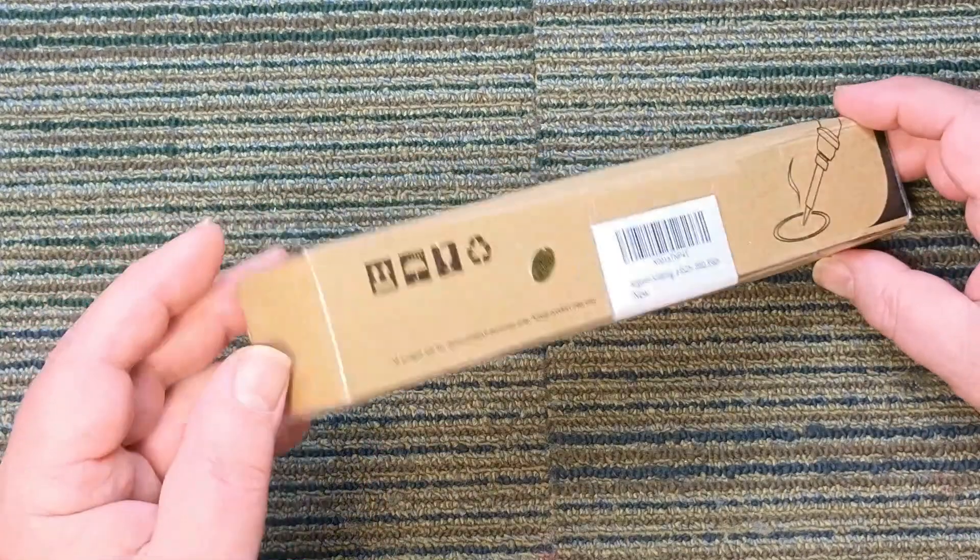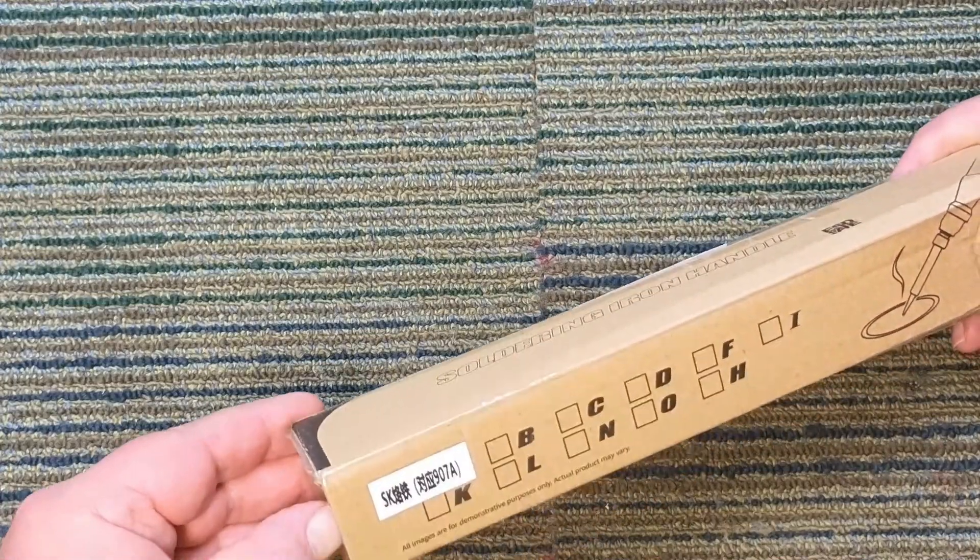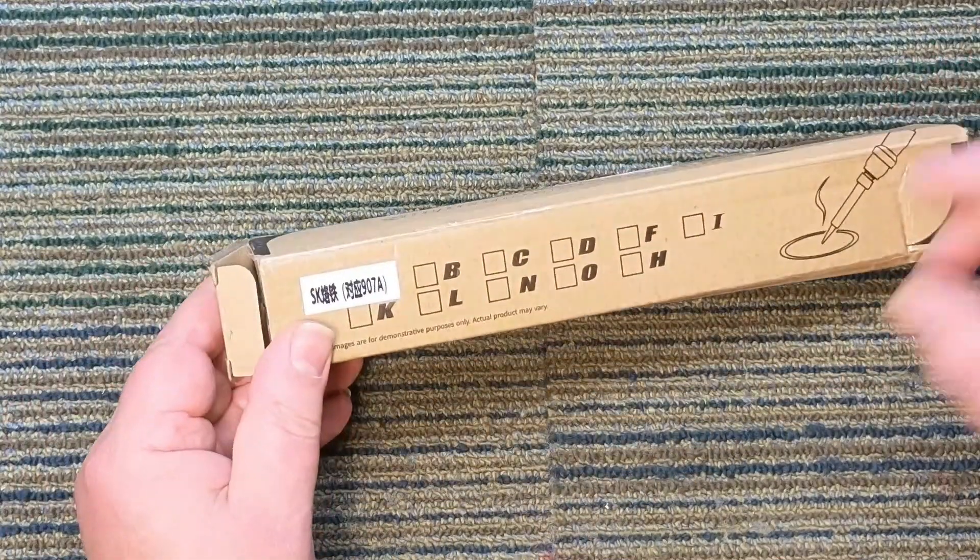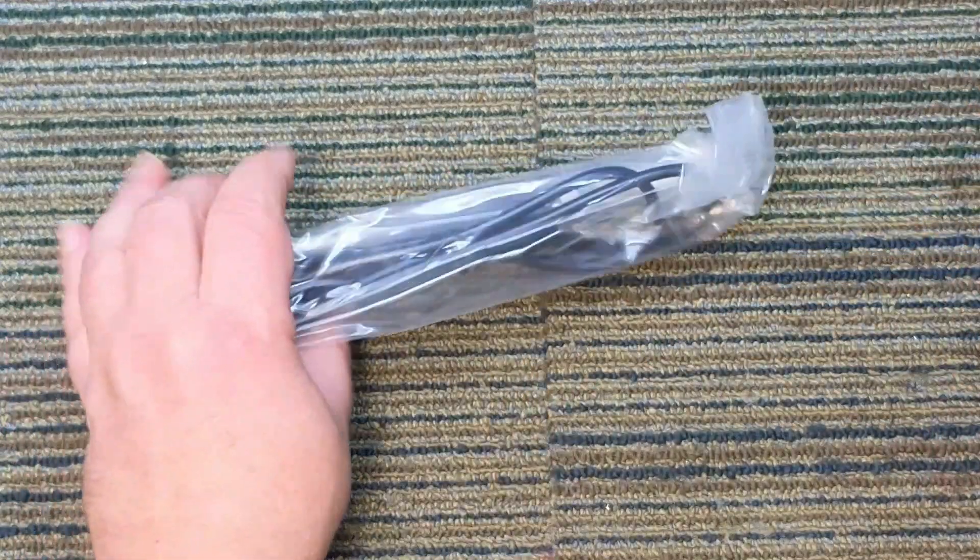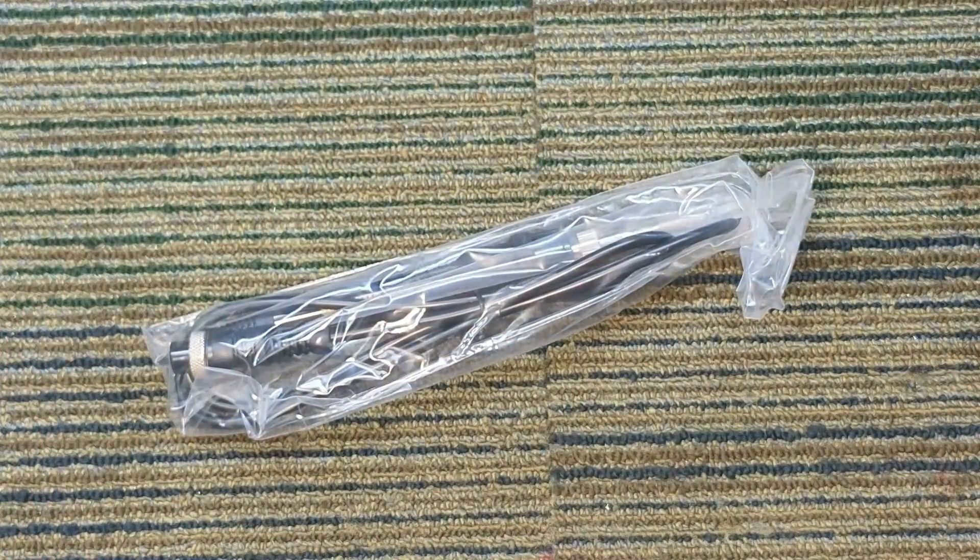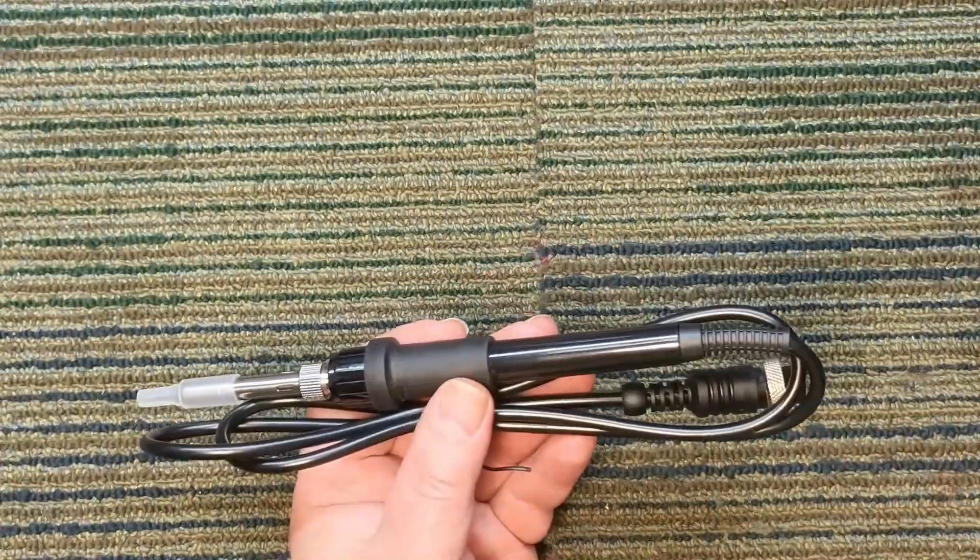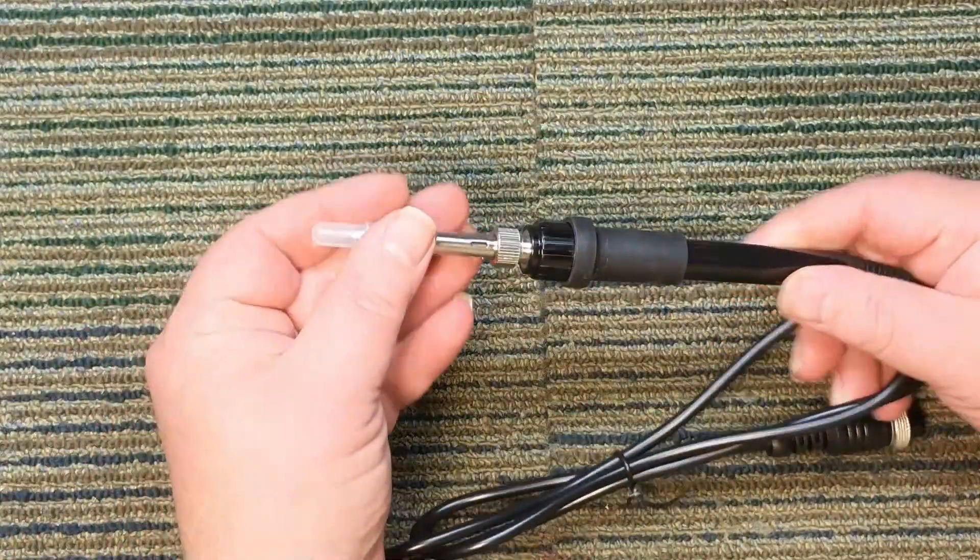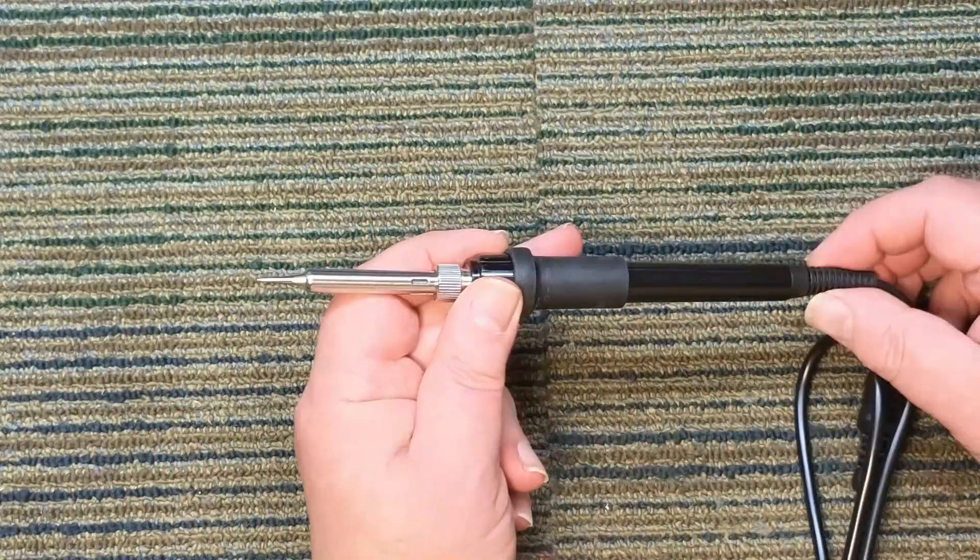This is a brand new one, and this one also says 907A. So they're about $15 a piece. That's with the whole thing with the cord. All you got to do is plug it in and go, put whatever tip you want on it.